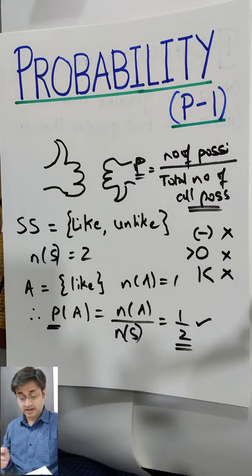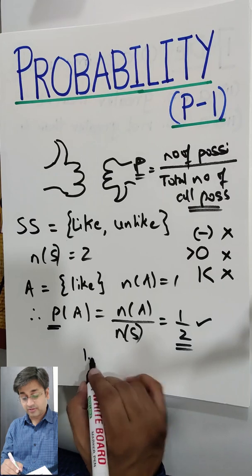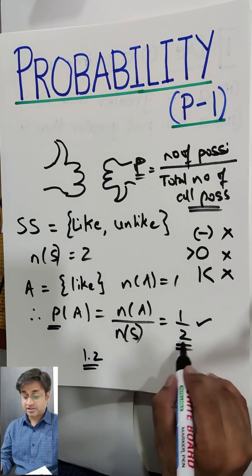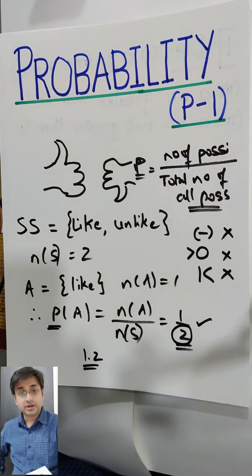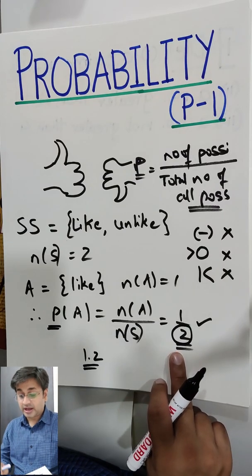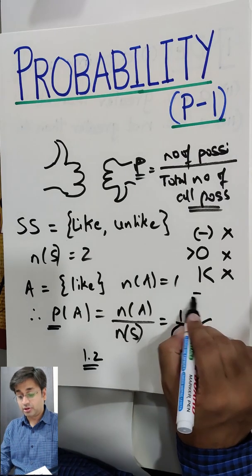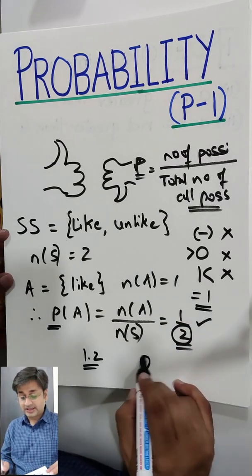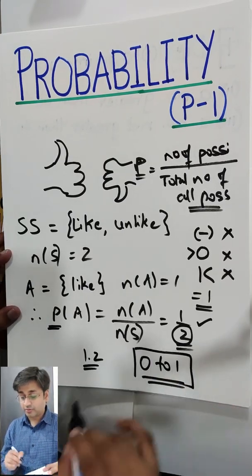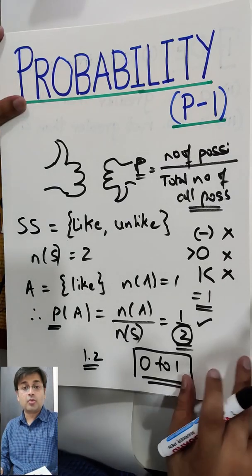These three possibilities are not possible. It can never be less than 0 — negative, obviously — and never greater than 1. So if they give you a fraction, the fraction will always have the denominator bigger, so that the value becomes less than 1. Or it will be equal to 1. So the range basically is from 0 to 1. Any answer in probability, the range always is going to be between 0 to 1. It can never be less than 0, it can never be greater than 1.